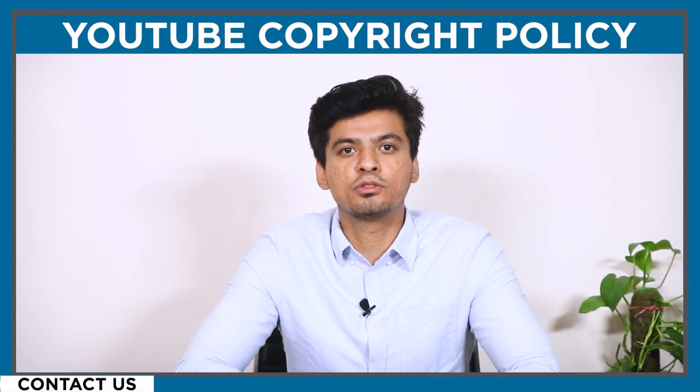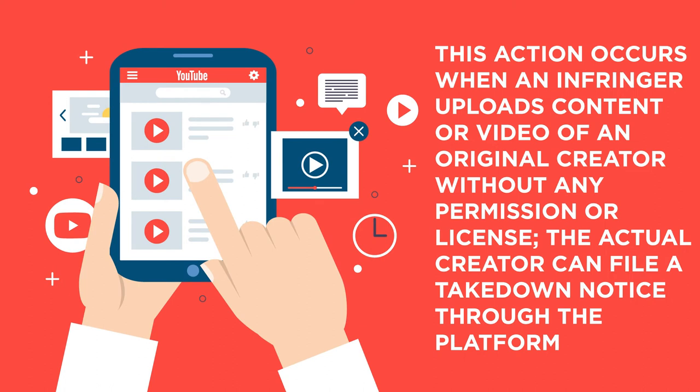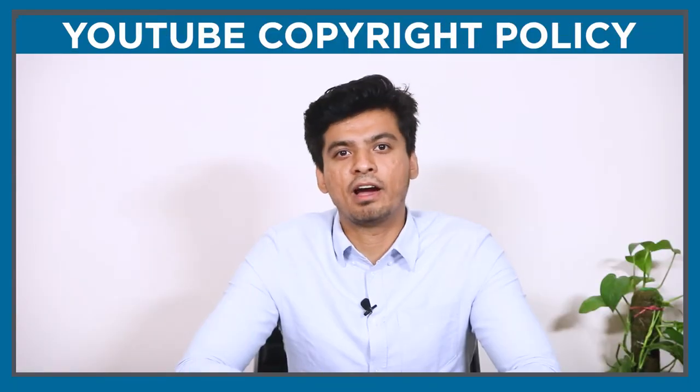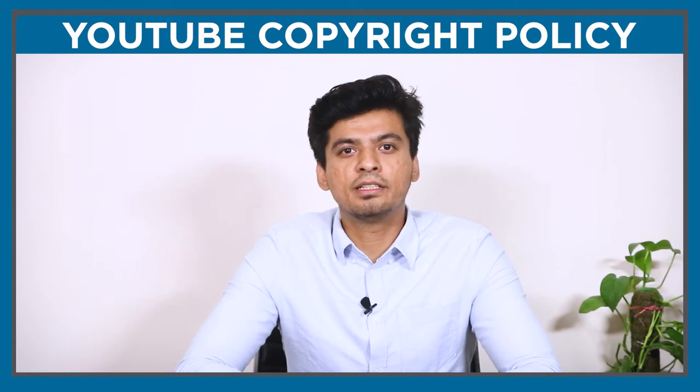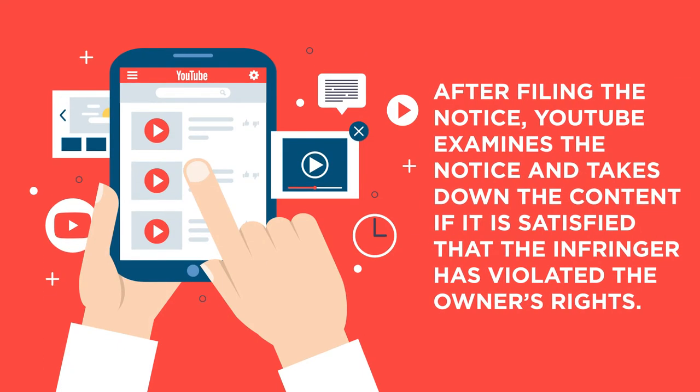There are two main reasons a published video is taken down or blocked. The first one is takedown action. These actions occur when an infringer uploads content or video of an original creator without any permission or license. The actual owner can file a takedown notice through the platform. This notice is a legal notice regulated by the principles of law. After filing the notice, YouTube examines it and takes down the content if it is satisfied that the infringer has violated the owner's rights.